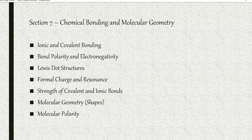Starting in section seven, we're going to be looking at bonding. We'll define ionic and covalent bonding, and then look at bond polarity and electronegativity. We'll introduce Lewis dot structures for valence electrons and formal charge and resonance. We'll look at strength of covalent and ionic bonds, then molecular shapes and molecular polarity.